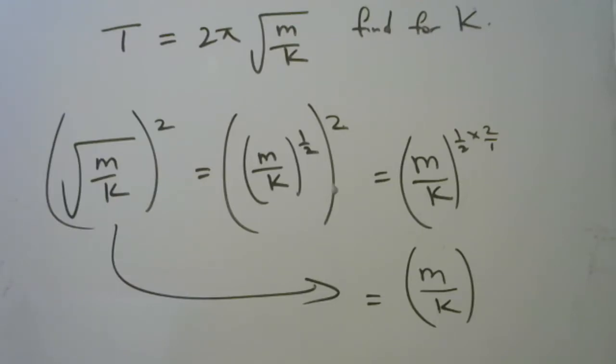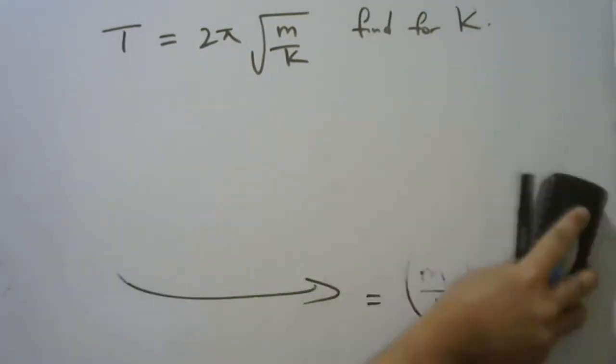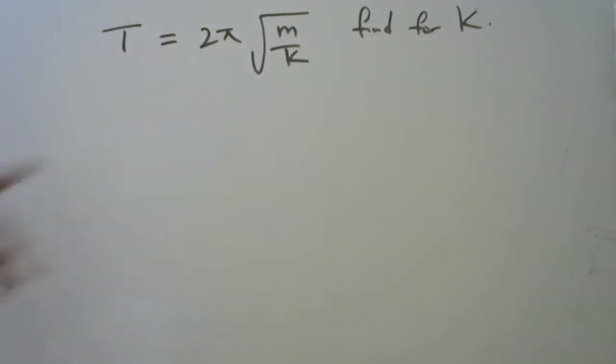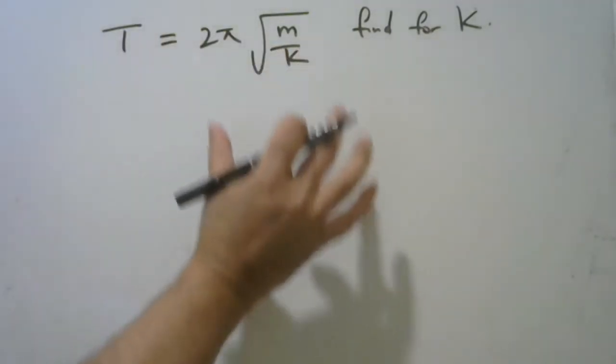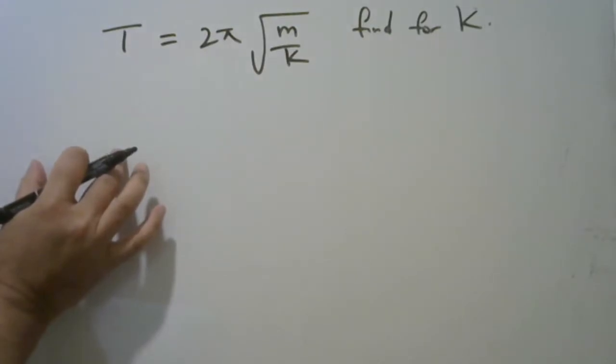Now, I'm going to go to the question and try to square both sides. So we want to find for k, we need to get rid of the square root. So what I do on one side, I need to do on the next side, right?